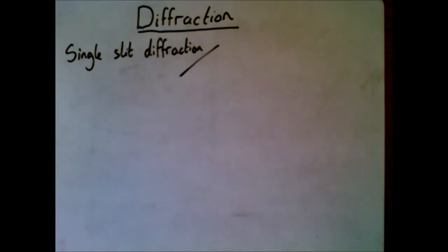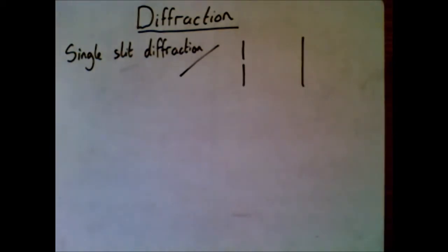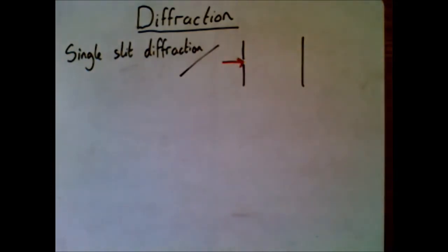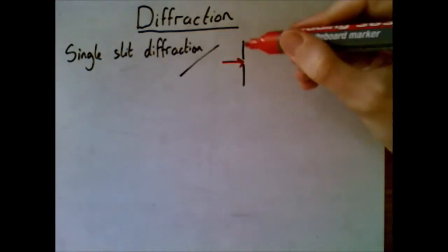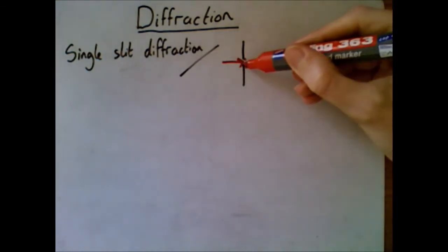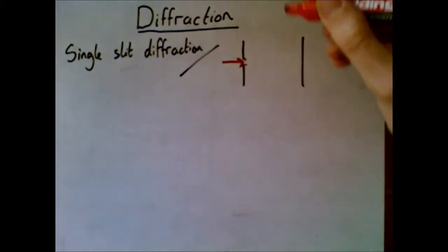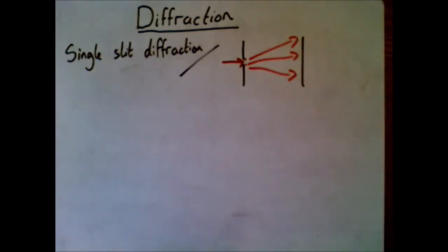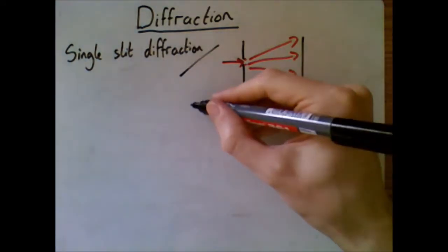As light travels through the slit — imagine the slit on one side and the screen on the other — light from different parts of the slit will interfere with light from other parts. Light coming through the top interferes with light coming through the bottom, almost as if they were double slits. If you combine the overall effect together, what you get is a kind of diffraction pattern, and it's not the same as for double slits — it's not equally bright, equally spaced fringes.